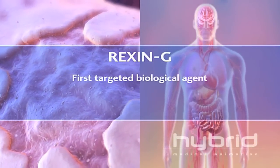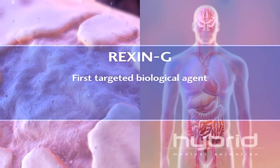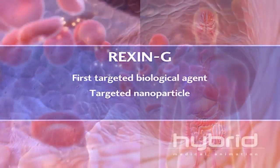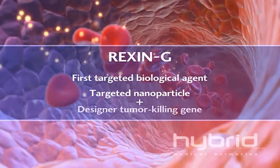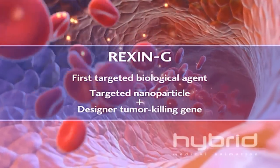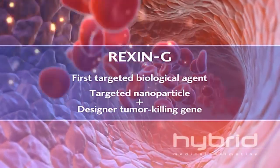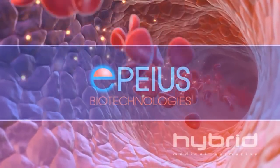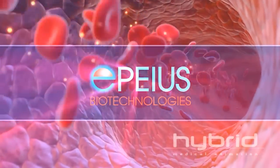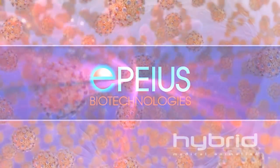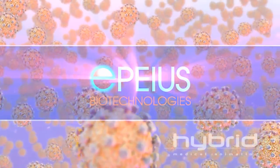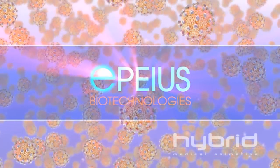Rexin-G is the first in a series of targeted biological agents. Combining a targeted nanoparticle with a designer tumor-killing gene, Rexin-G is designed to seek out and destroy a tumor, regardless of its location in the body, thereby reducing tumor burden, prolonging survival, and enhancing the patient's quality of life.